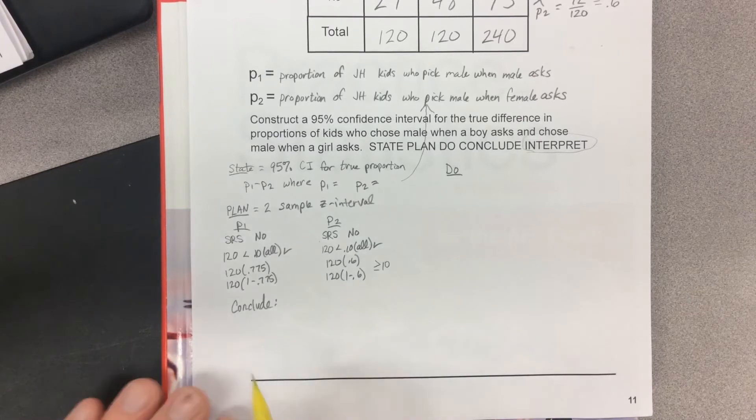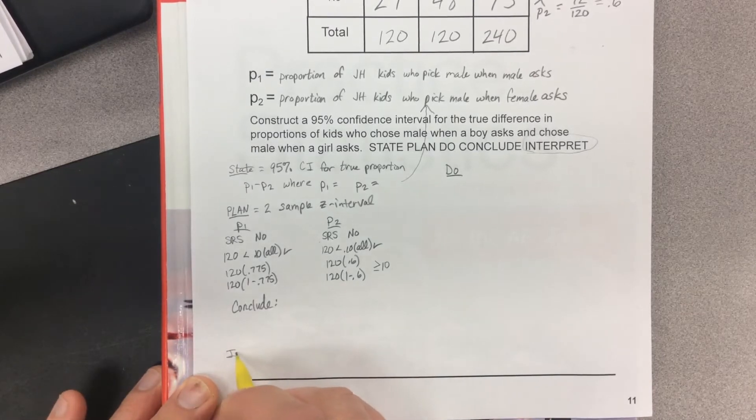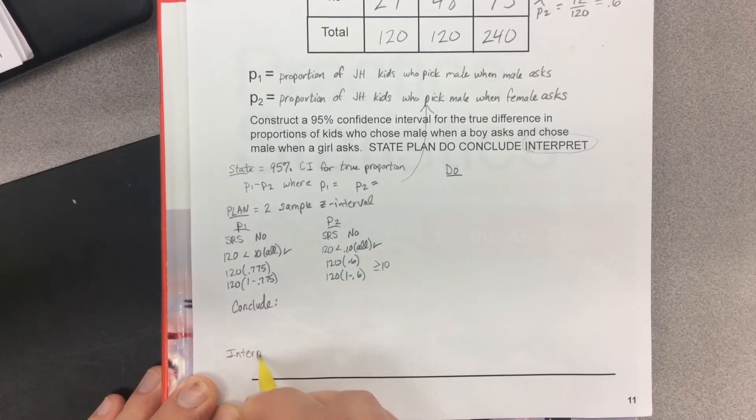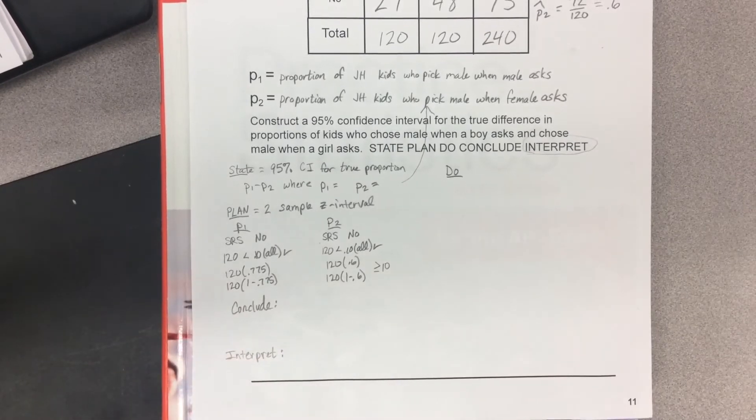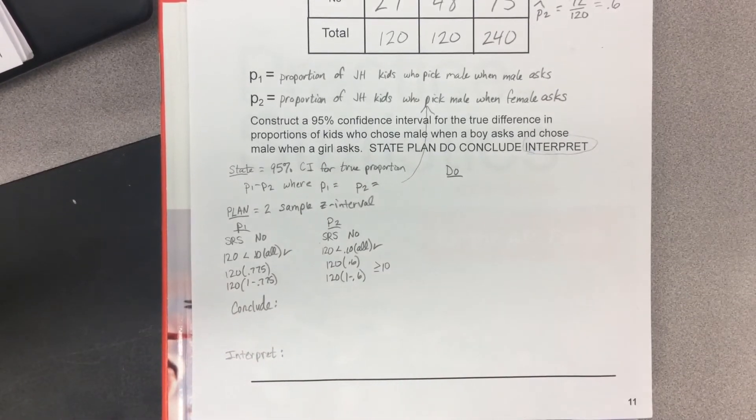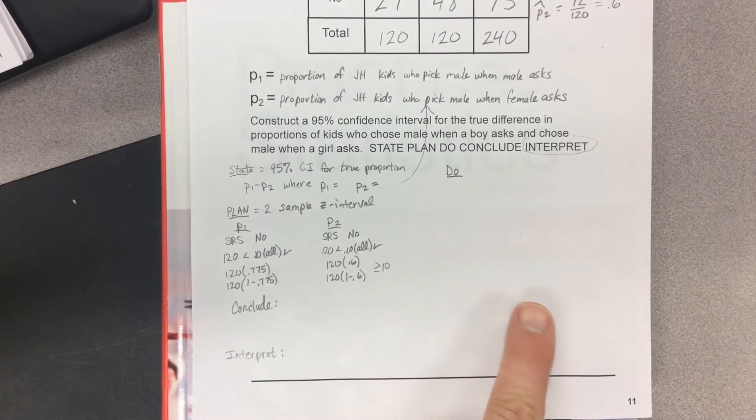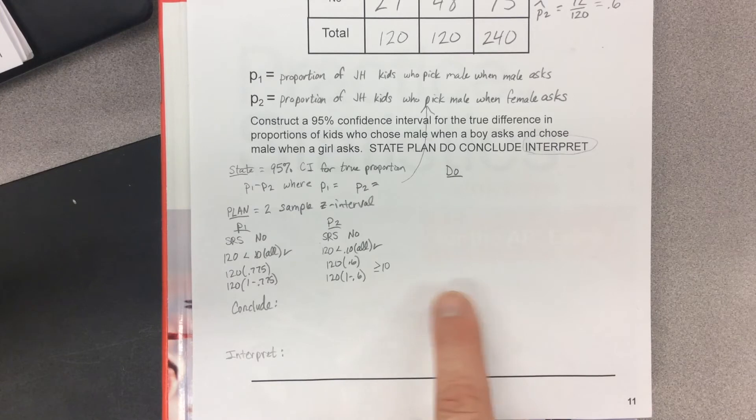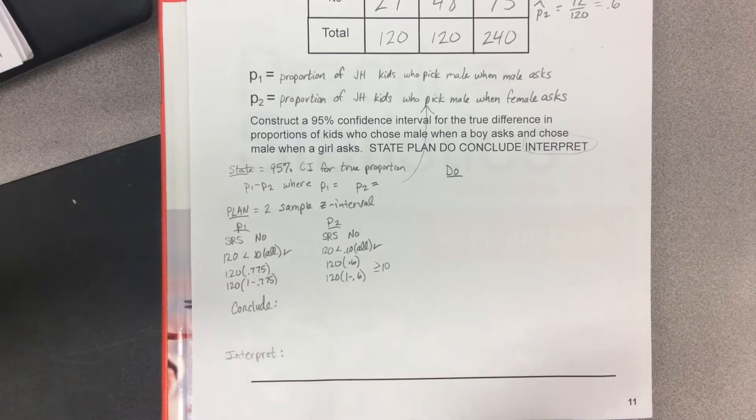But then after that, I want an interpret step. Interpret means what is going on in the context of the problem. Specifically on your interpret step, I want you to discuss if zero is in your confidence interval. If zero is in this confidence interval, there's a likely chance the true proportion is in this interval.